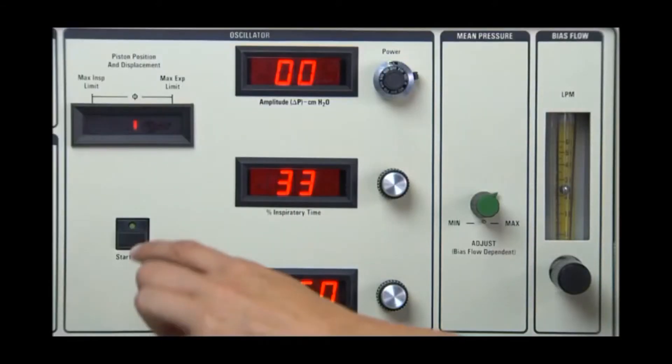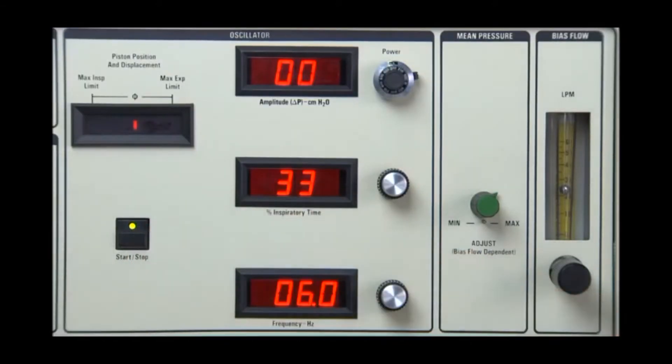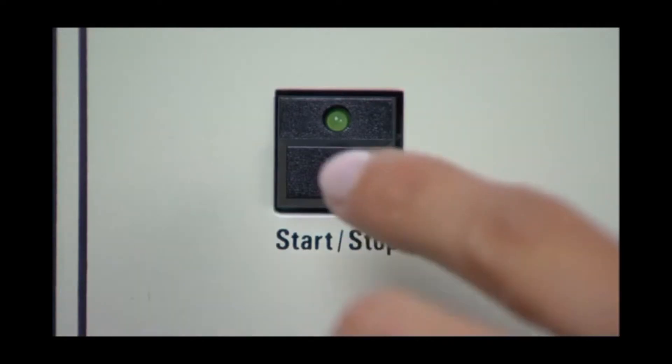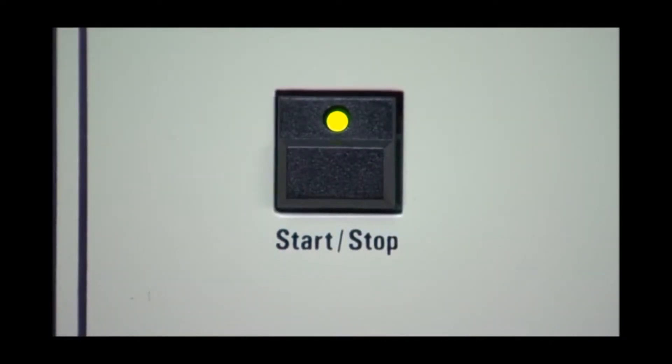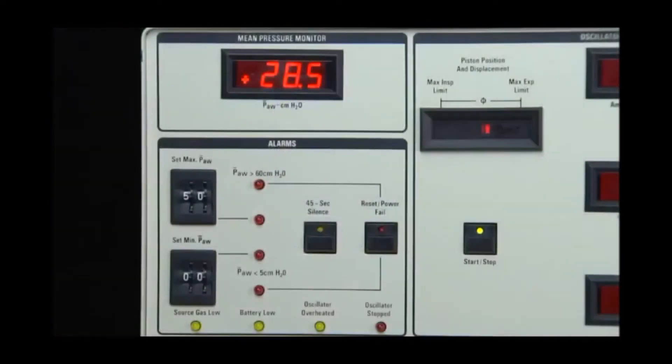To activate the oscillator, press the start-stop button. The green LED will illuminate, showing the oscillator circuit is energized. The mean airway pressure must be at least 5 cm of water pressure in order for the oscillator to activate. The oscillator may be stopped without complete loss of mean airway pressure. This allows for auscultation of the patient without the loss of lung volume.